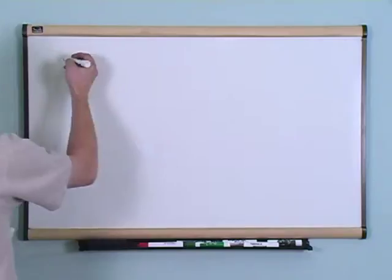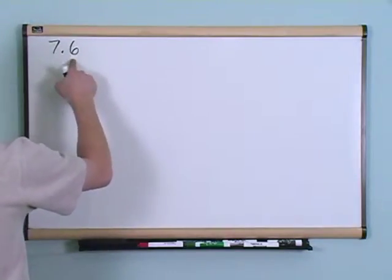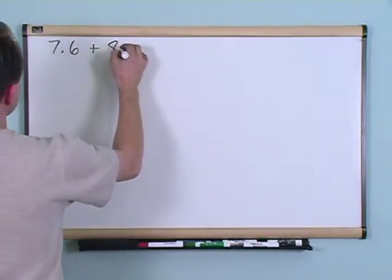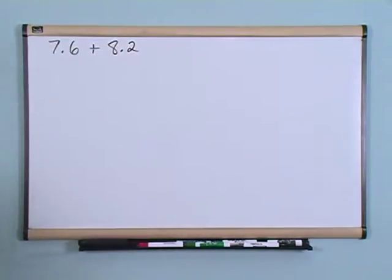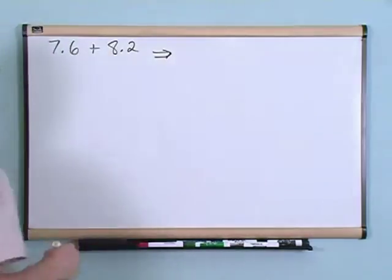So let's say you had a problem like 7.6 plus 8.2. Well the good news is adding, subtracting, and multiplying decimals are very similar to what we've already done.